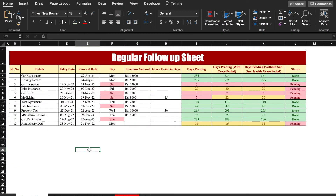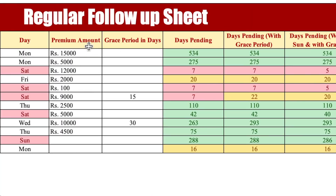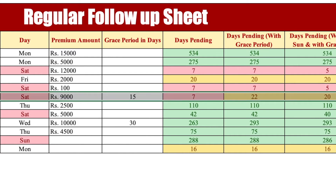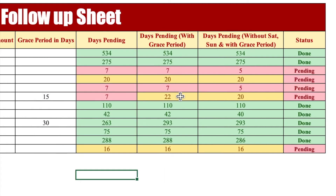This is a regular follow-up sheet which I have created in advance. There are a few things like details of your policies, policy dates, renewal dates, and days — days will be automatically changed whenever the renewal date changes. Premium amount, grace period in days — few policies like medi-claim give a grace period of 15 or 30 days. Days pending will be automatically calculated. Days pending with grace period, and days pending without Saturday and Sunday with grace period.